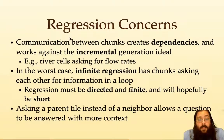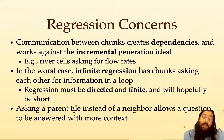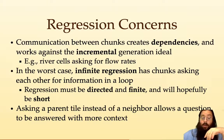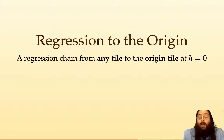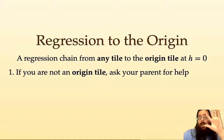Communication between chunks creates dependencies, and that works against incremental generation — like rivers asking each other for flow rates. In the worst case we have infinite regression, so we want regression to be directed and finite and hopefully short. In fractal coordinates, instead of asking neighbors, we can try asking our parent tile, and that actually allows the question to be answered with more context.